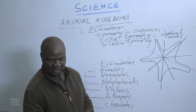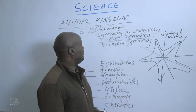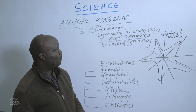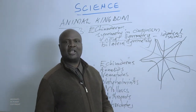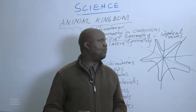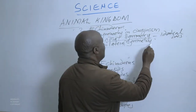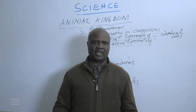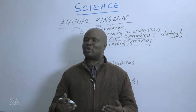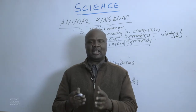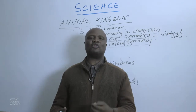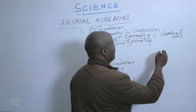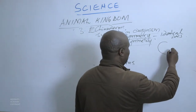Now we want to advance to bilateral symmetry. We shall use an animal that gives a good example — a human being. If you take a human being, there is only one way you can divide them so that the two halves are exactly identical and replica to each other.